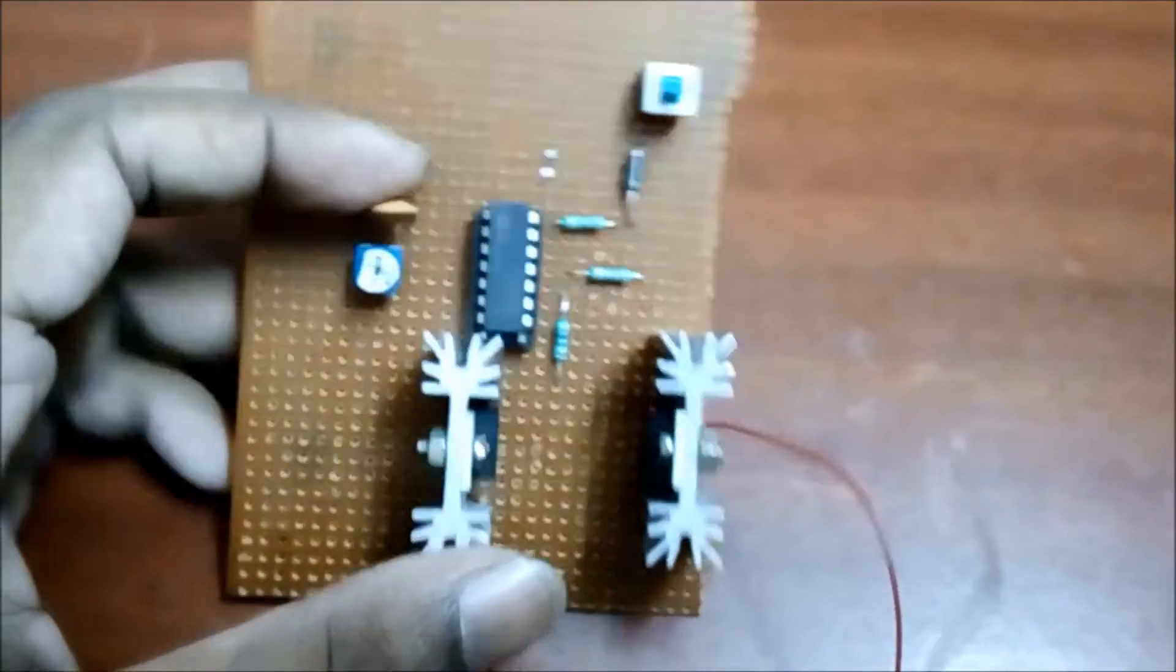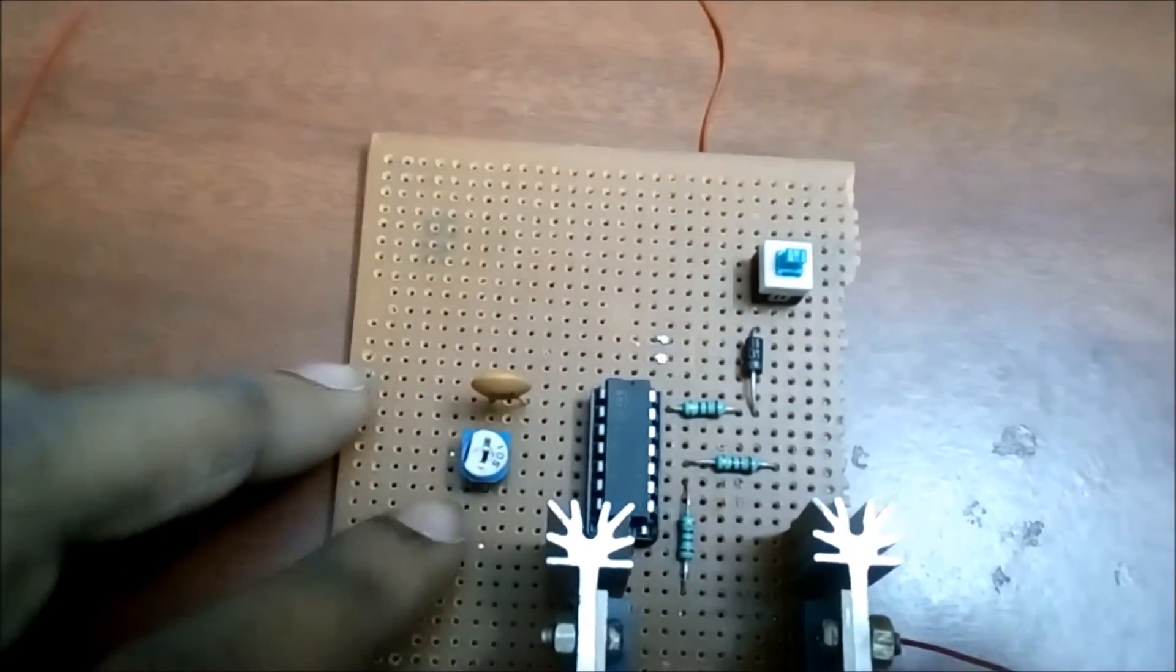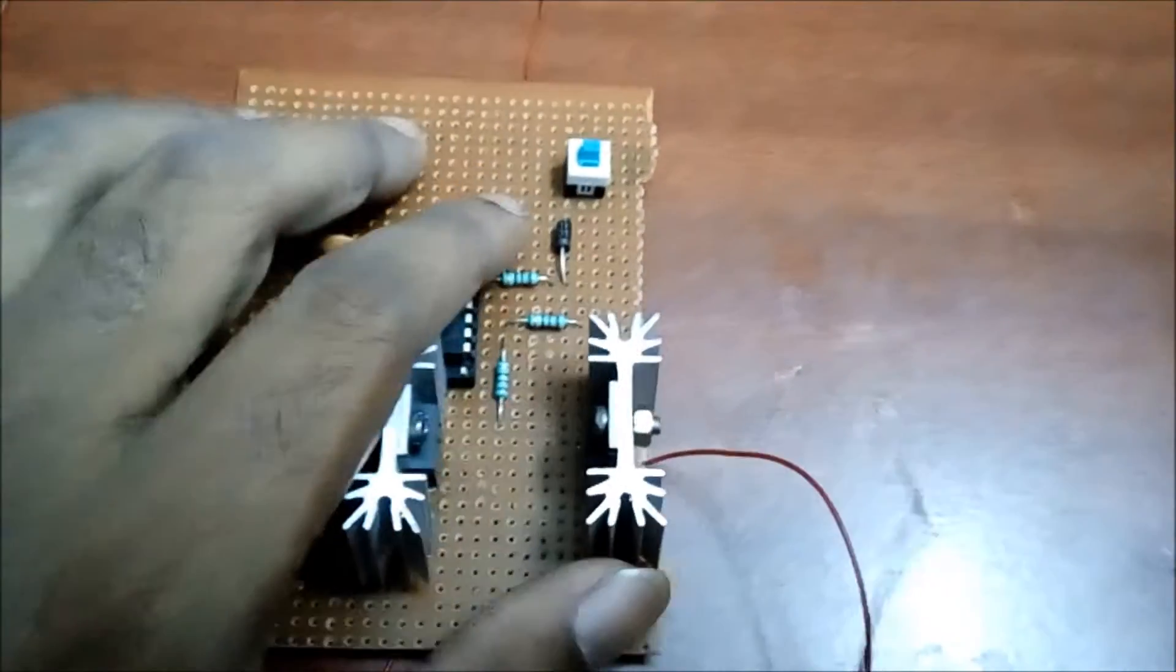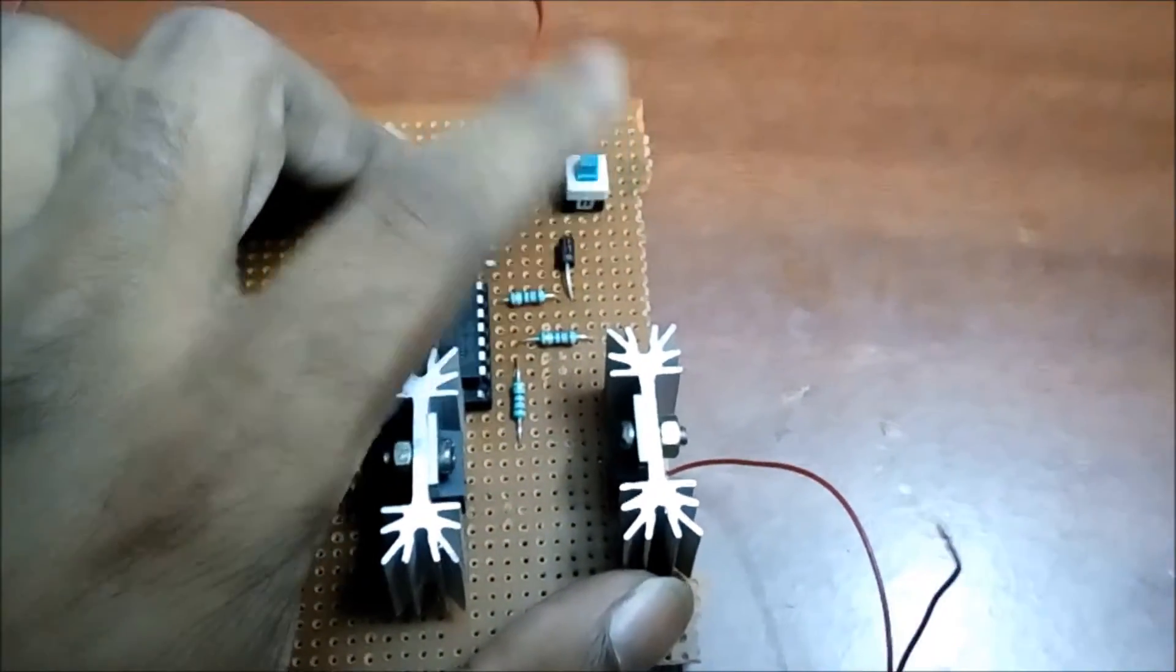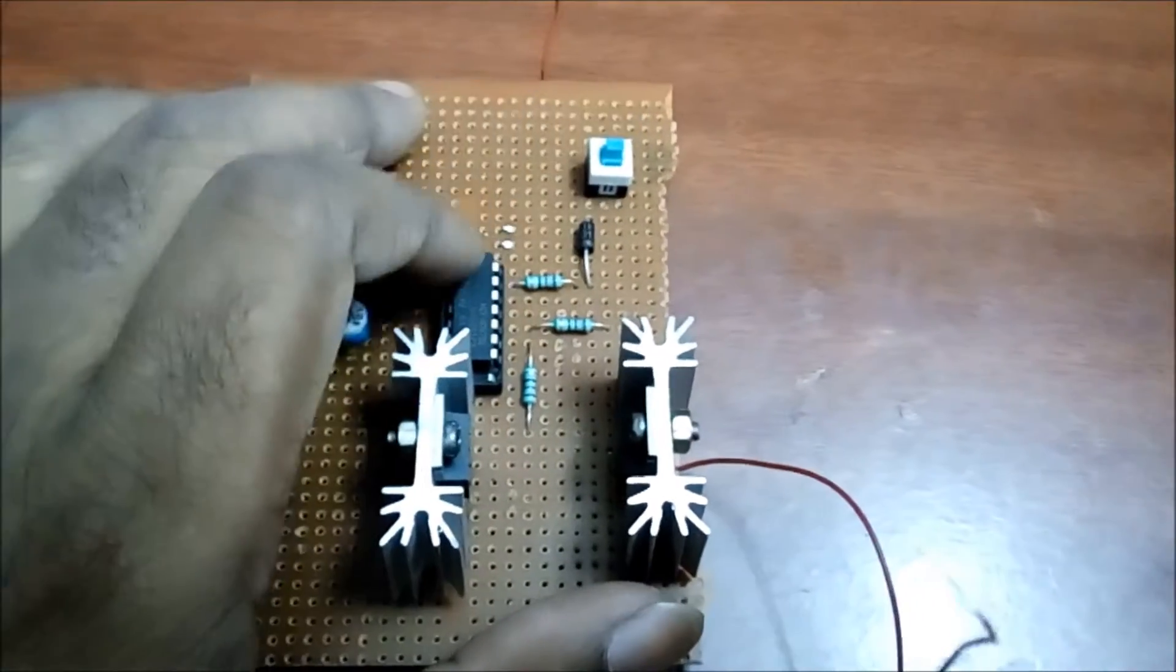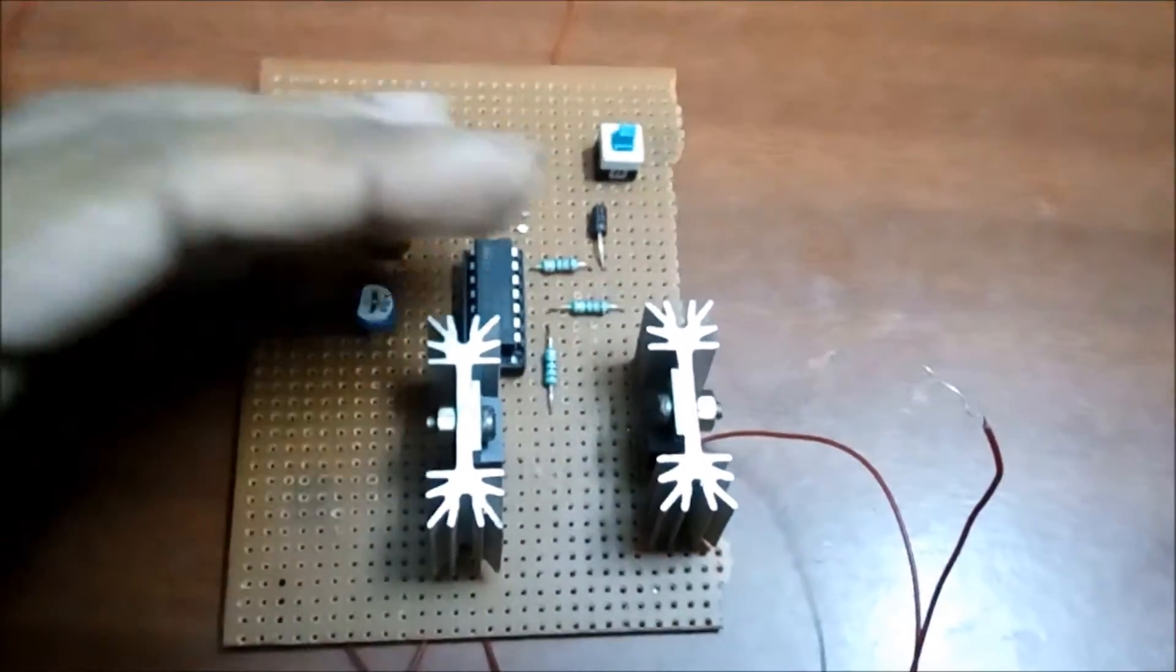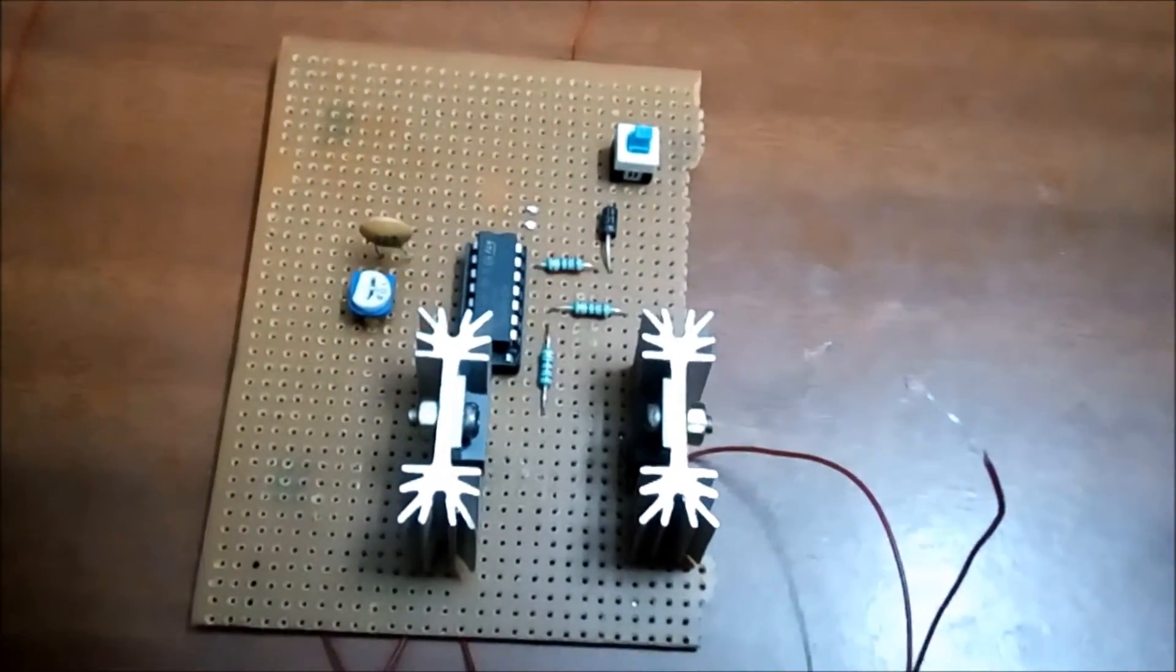This is your 0.22-microfarad capacitor. And over here, this is your 1-megahertz preset. And these two are your IRFZ44 MOSFETs. And these three are your 220-ohm resistors. This is diode, and this is switch. I connect a switch to give the supply from battery to this IC. When I switch it on, the supply will come from the battery to the IC, and after that it will be converted to AC.